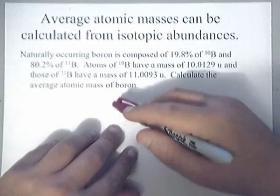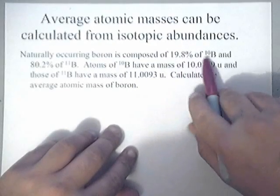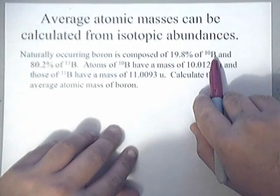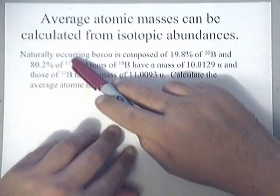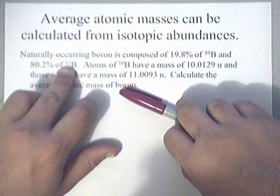Basically, all that this is, is they're giving you different isotopes of the element boron here. You have isotope boron-10 and boron-11.